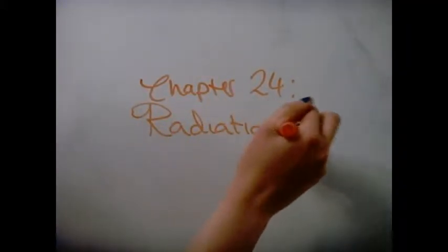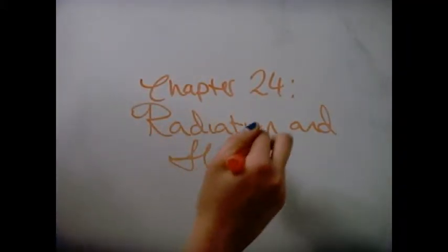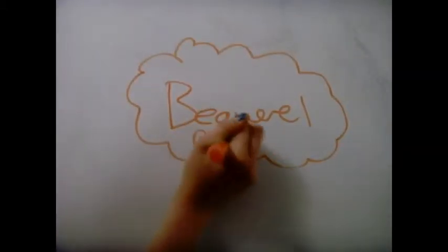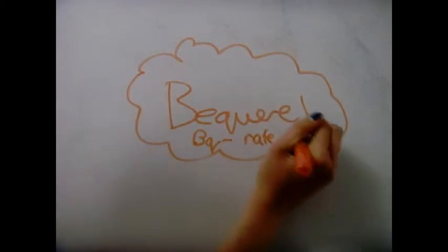Chapter 24, Radiation and Half-Life. Decay is a random, irregular process. The Becquerel is a measure of rate of nuclear decay.